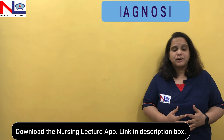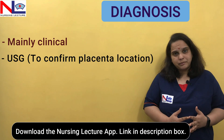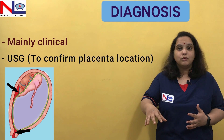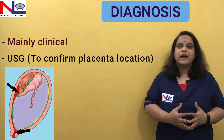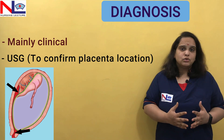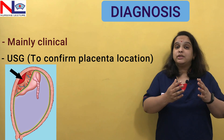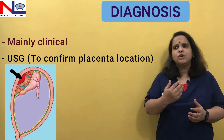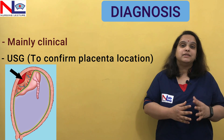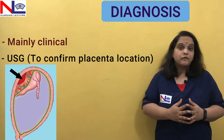The diagnosis of abruptio placenta is mainly clinical. Ultrasonography is available but it is not confirmatory, because in the revealed type of variety where blood is coming out, we cannot identify any blood collected behind the placenta. It may be beneficial for the concealed type of bleeding where blood is collected behind the placenta, but it is not necessary that in each ultrasound scan we can identify the retroplacental hematoma.